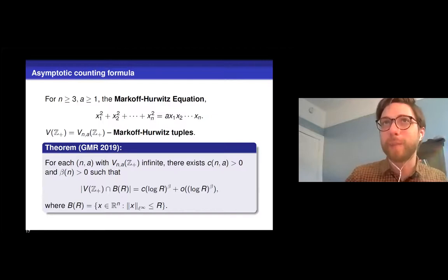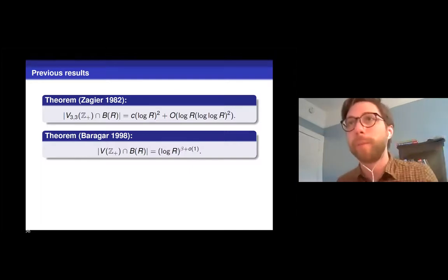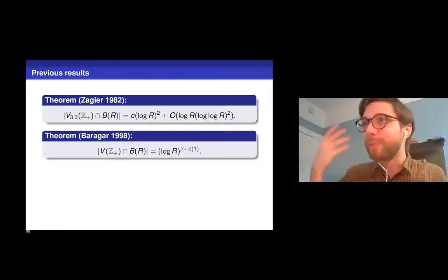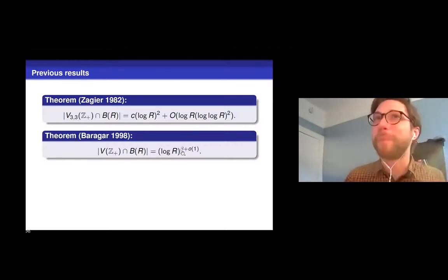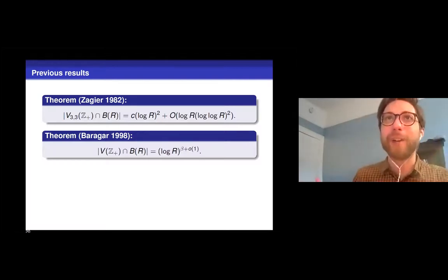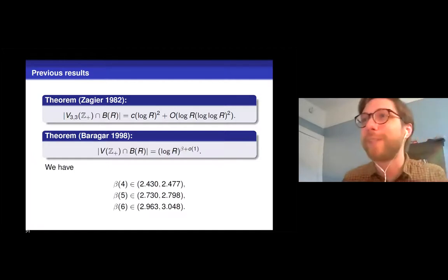Zagier had this nice explicit formula that for the n equals three case, we have a constant times log r squared. So we have this constant times log r to the beta now in the general case. So there's something to say here. First, let me briefly outline some of the previous work. So we already talked about Zagier's result, which I've rewritten here in this slightly new notation. And then the previous best result for the general case was a result by Baragar, who had an asymptotic for the exponent. So Baragar was the first person to notice this number beta here.